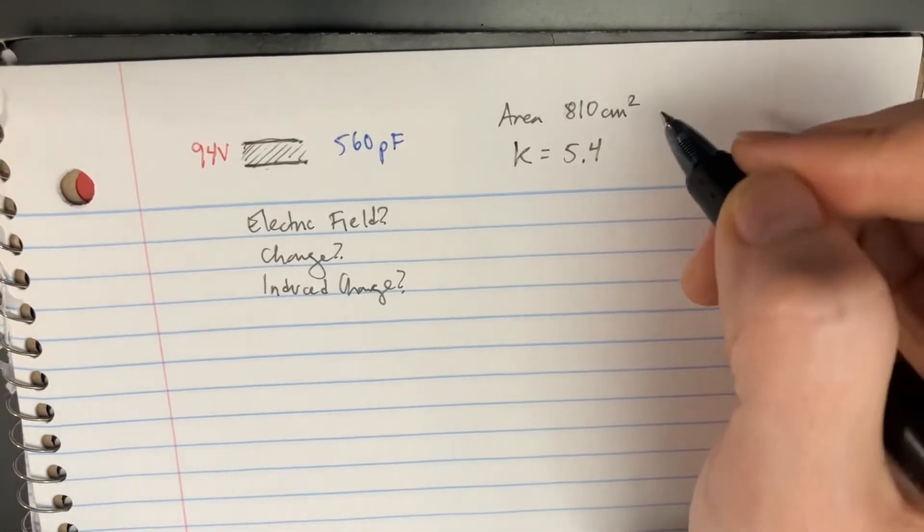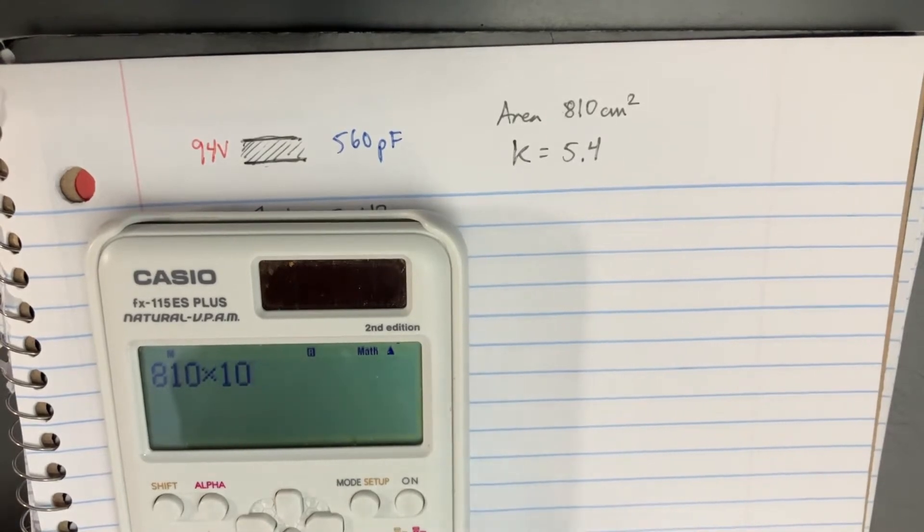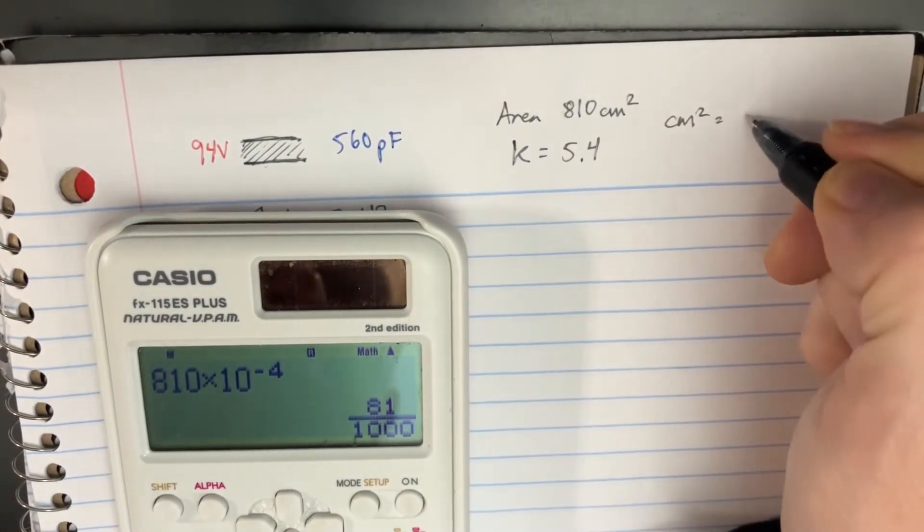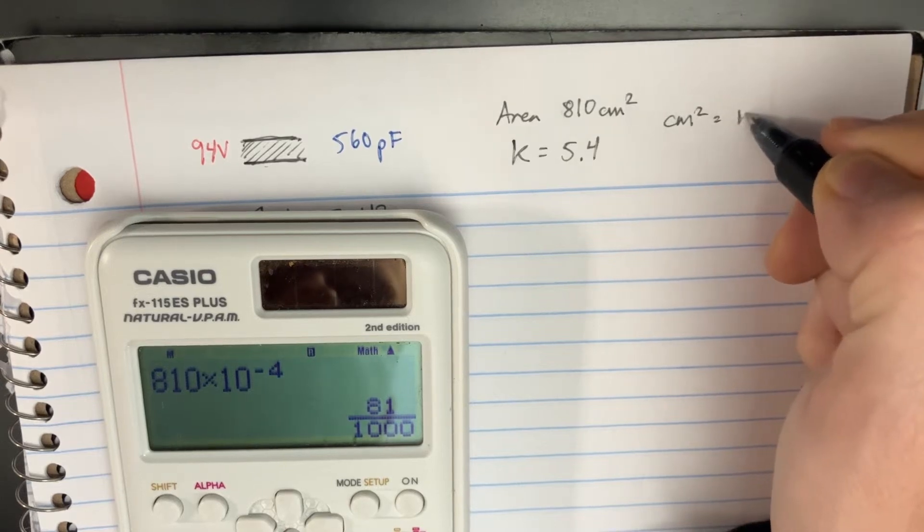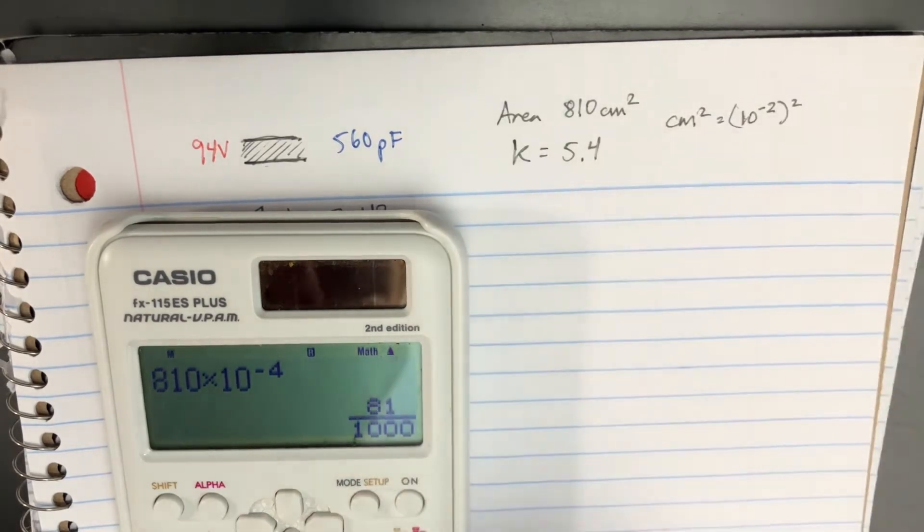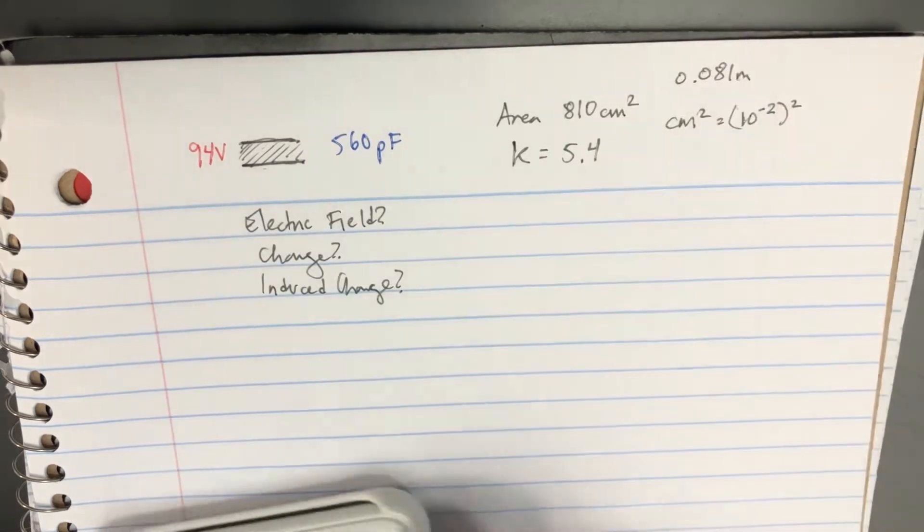If we convert this to meters, it's going to be 810 times 10 to the negative 4. That's because centimeters squared equals 10 to the negative 2 squared. So we end up with 0.081 meters for the area.